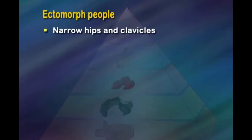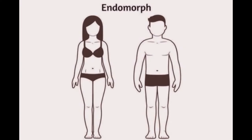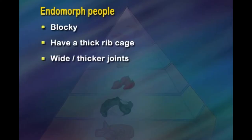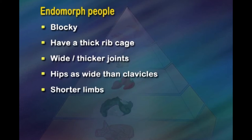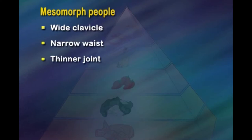Endomorphs are adept at storing fuel, with muscle and fat concentrated in the lower body — the hardest body type to manage in terms of weight and fitness. They are generally blocky, with thick ribcage, wide and thicker joints, hips as wide as or wider than clavicles, and shorter limbs. Mesomorphs find it easiest to add new muscle and don't tend to store much body fat. They tend to take their naturally athletic builds for granted, which can result in poor training and diet practices. They have wide clavicles, narrow waist, thinner joints, and long, round muscle bellies.